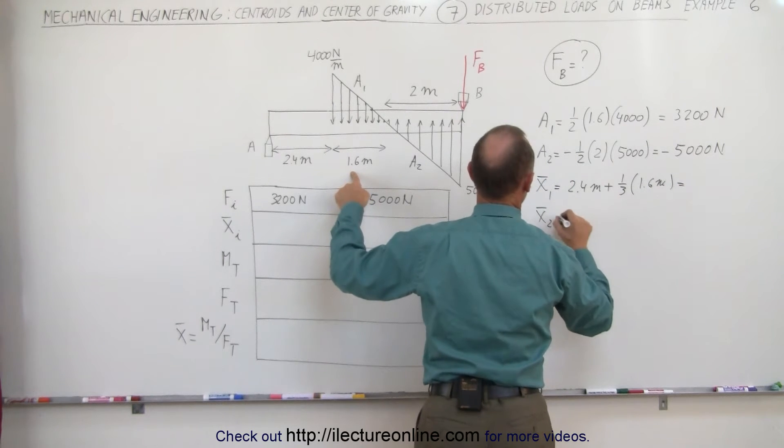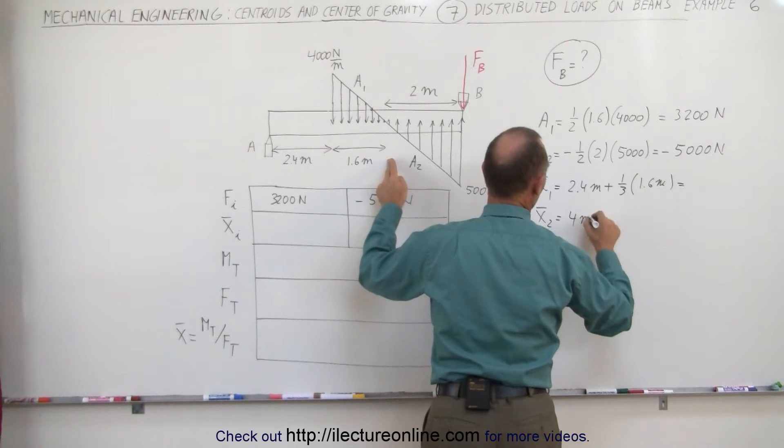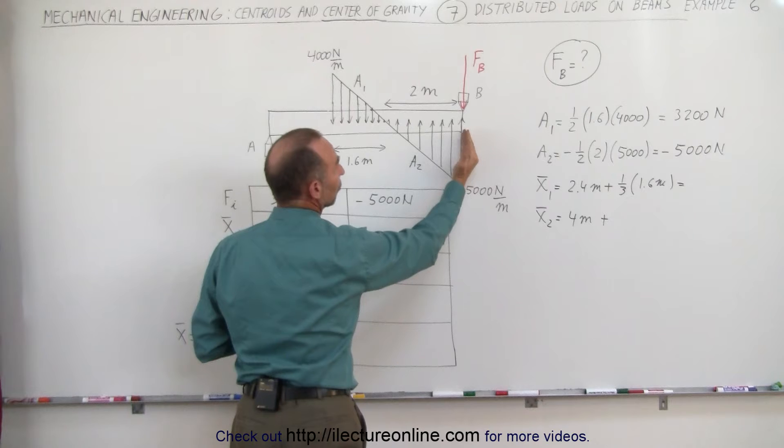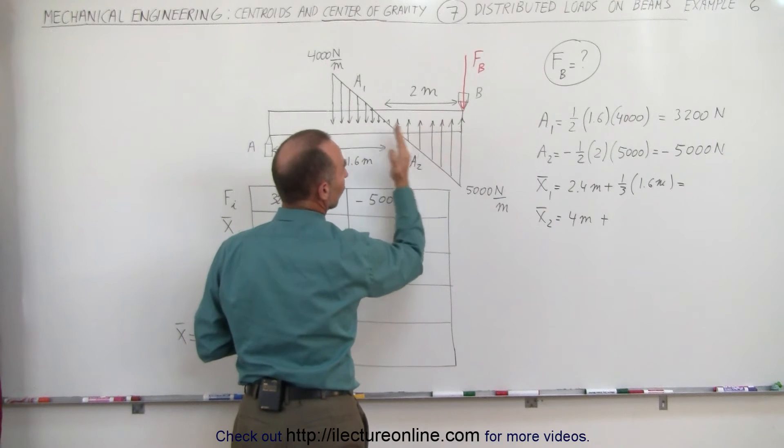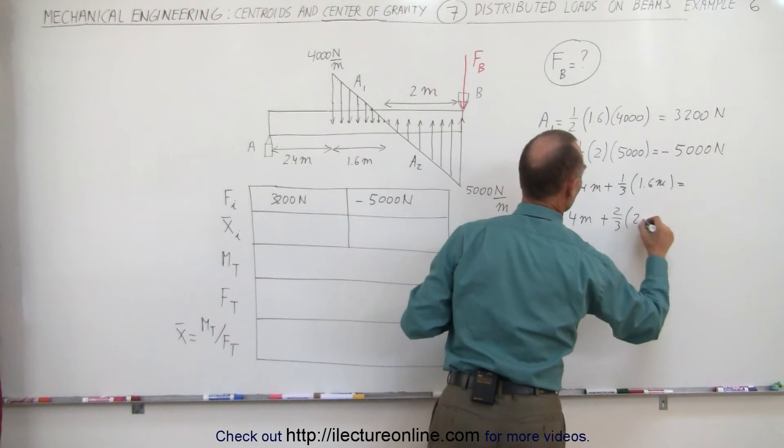And x2 is equal to a starting point of 4 meters plus, and since the triangle is turned around, it would be two-thirds the distance from the left, plus two-thirds times a distance of 2 meters.